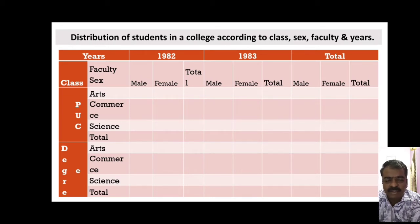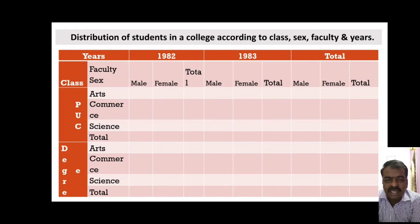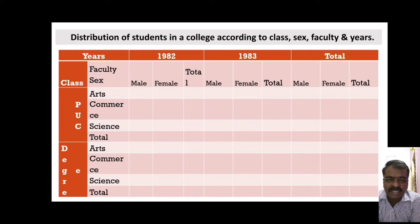The first characteristic was class, that is PUC or degree. Second, we took it faculty-wise, whether PUC faculty or degree faculty, further bifurcated into arts, science, and commerce. The third classification was on the basis of gender — total number of male and female students in each stream. The fourth was the year. So the first classification was on the basis of class, second on faculty, and third on gender.